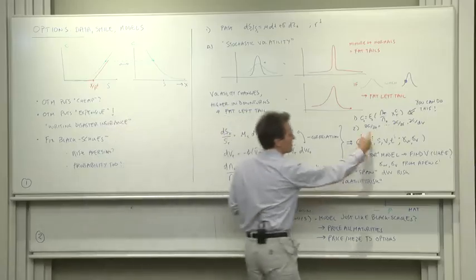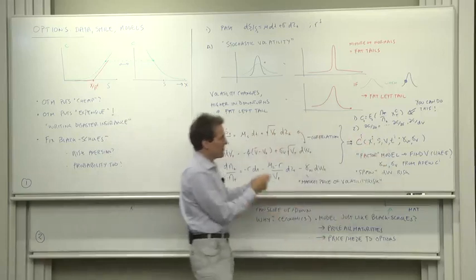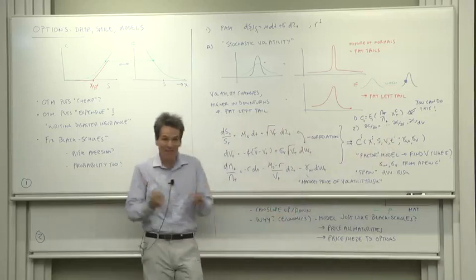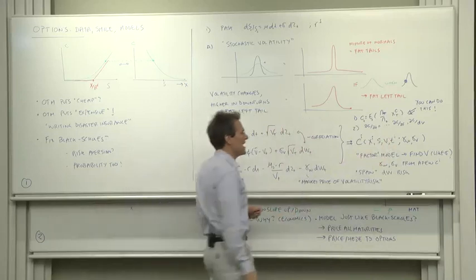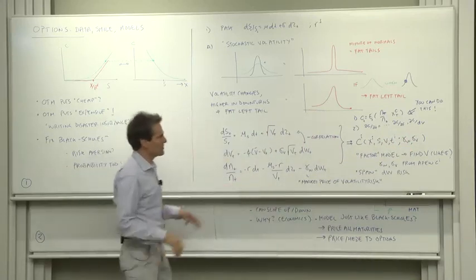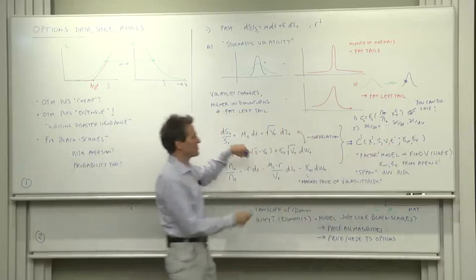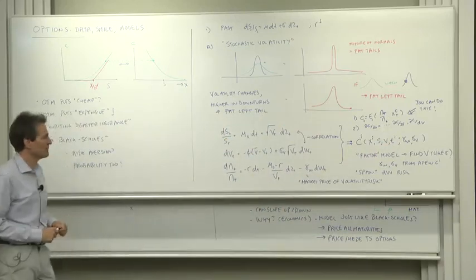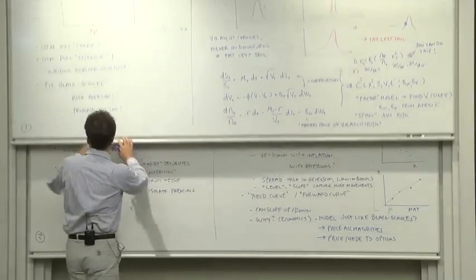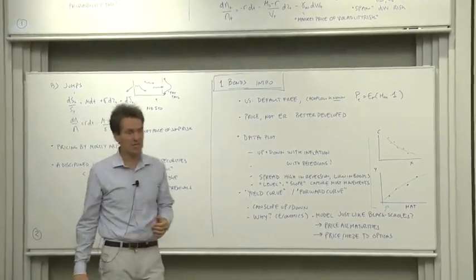But there's only, for all call options, there's only two things varying. There's the stock price, which we observe. There's V, and from seeing 10 or 20 different call options, you can figure out what the value of V had to be. That's the implied volatility for that day. And we have these parameters, but you can figure out one parameter from the data. So this will generate for you, it's like a two-factor model. And you can figure out the parameters that you need from the strike, from the call options as a function of strike. With this additional parameter in there, the market price of volatility risk.